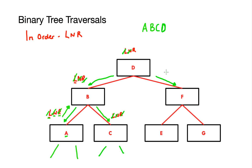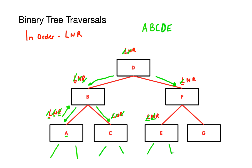Now I look at the final rule at node D, which is the right subtree, and move down to F. At F I rewrite my rule — left, node, right — and check the first one, which is the left subtree of F. I go down to E, rewrite my rule there, and check the left subtree of E which is non-existent. I take the node E, write it down in my list, and then check the right subtree of E — nothing there. That means I've completed all the rules at E and move back up to F, checking the left rule off.